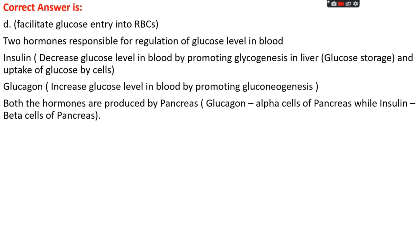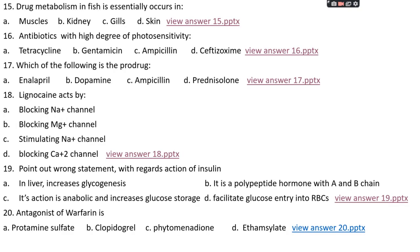There are two hormones responsible for regulating blood glucose: insulin and glucagon. Insulin decreases blood glucose by promoting glycogenesis in the liver and uptake of glucose by cells. Glucagon increases blood glucose by promoting gluconeogenesis — formation of glucose from non-glycogenic products. Both hormones are produced by the pancreas: glucagon by alpha cells and insulin by beta cells.